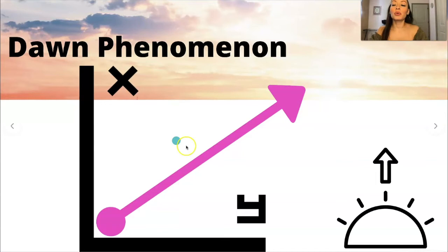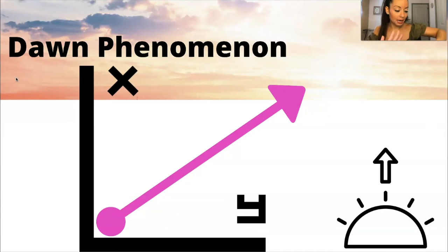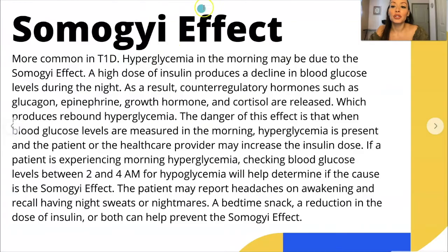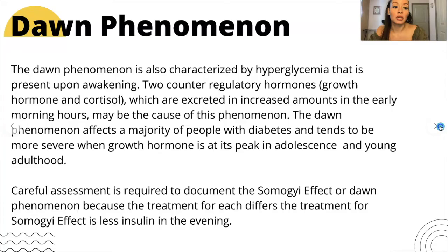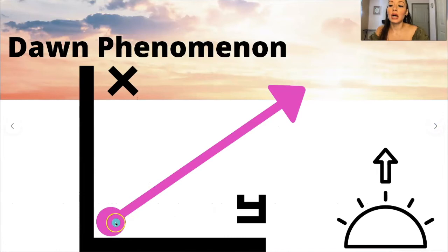Remember with the Somogyi we had the crash? Think of dawn — the sun rises. The sun rises at dawn and does not dip down and go back up. It's not a yo-yo. The Somogyi effect is like a yo-yo. Somogyi has a Y in it and it goes like a yo-yo — down and back up. Whereas the Dawn: the sun rises. It just steadily climbs until you check their blood glucose. It steadily climbs all night. That is the Dawn phenomenon — the sun rises, just rising up, no dip.